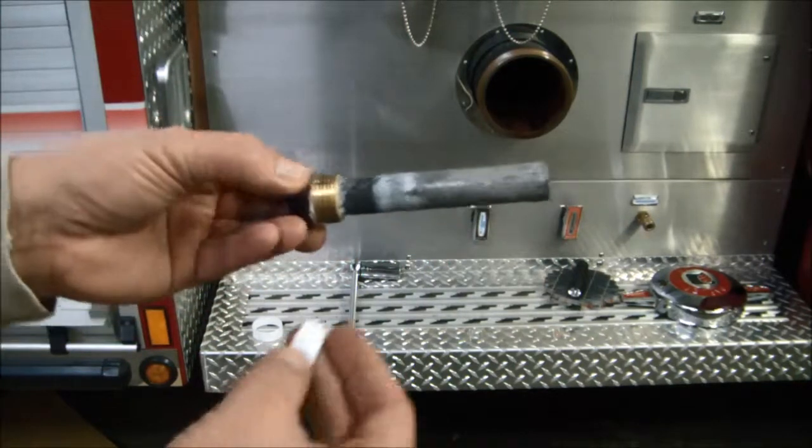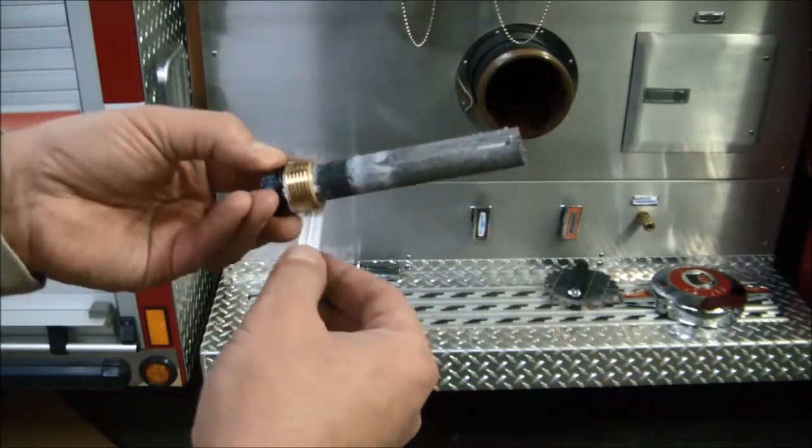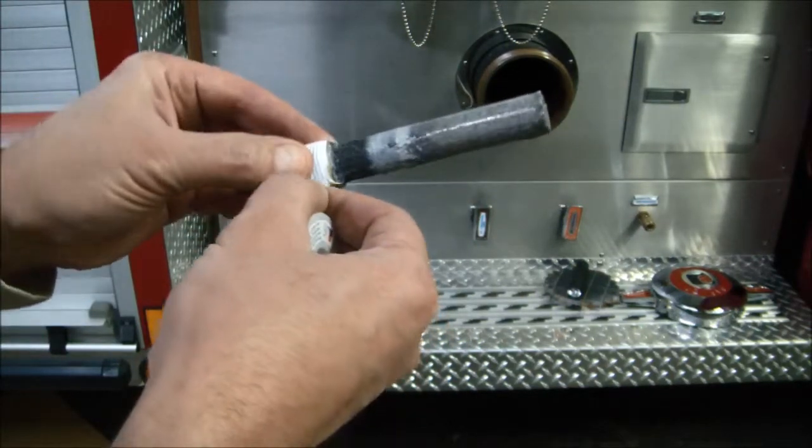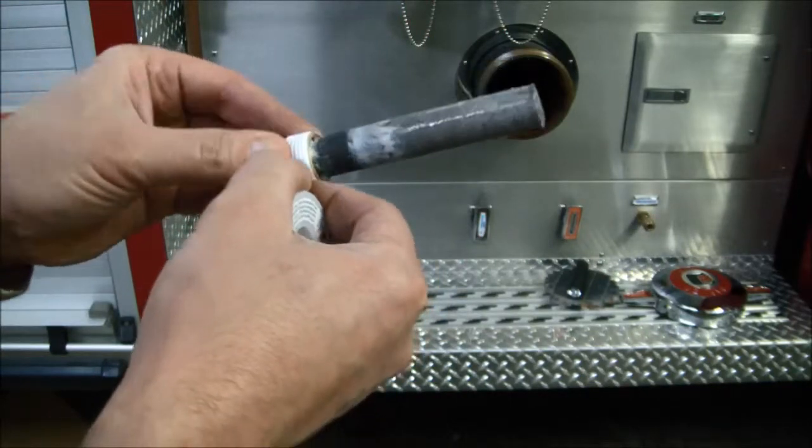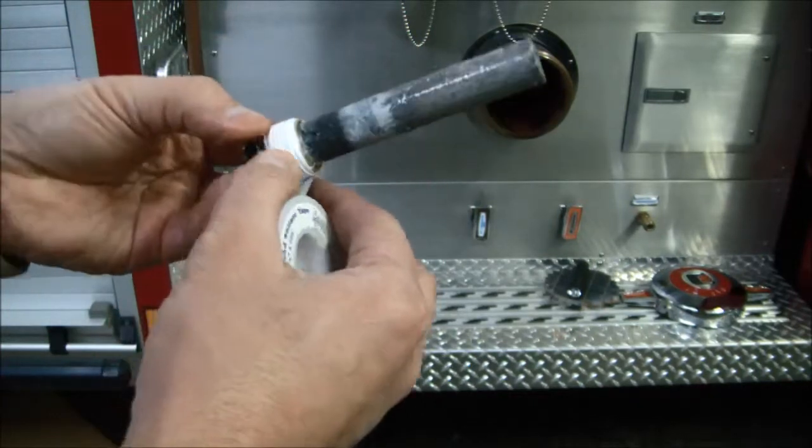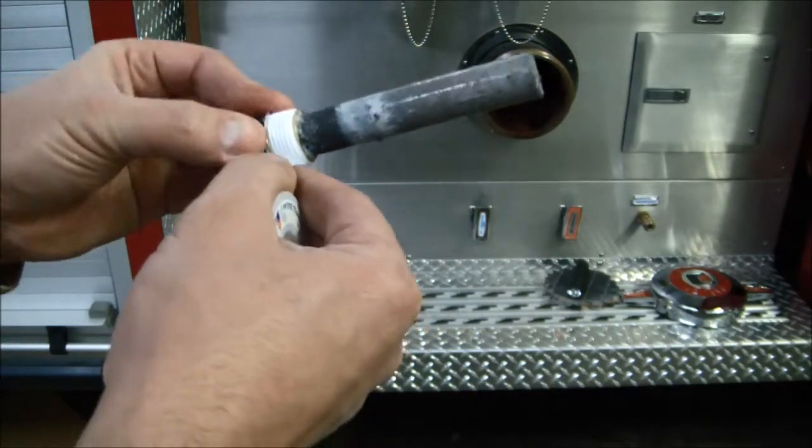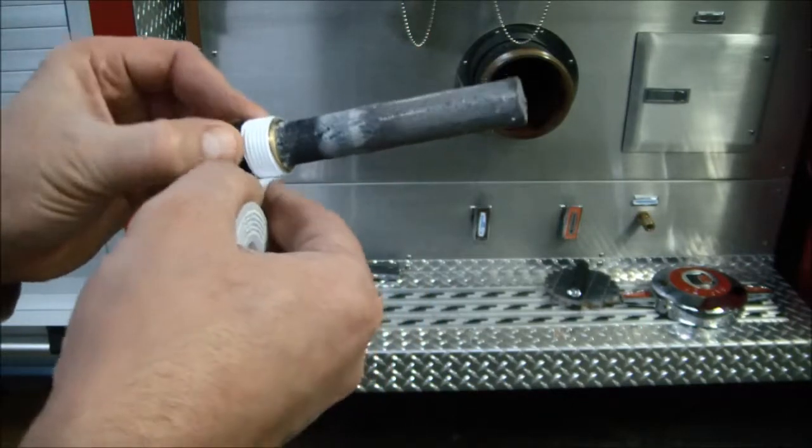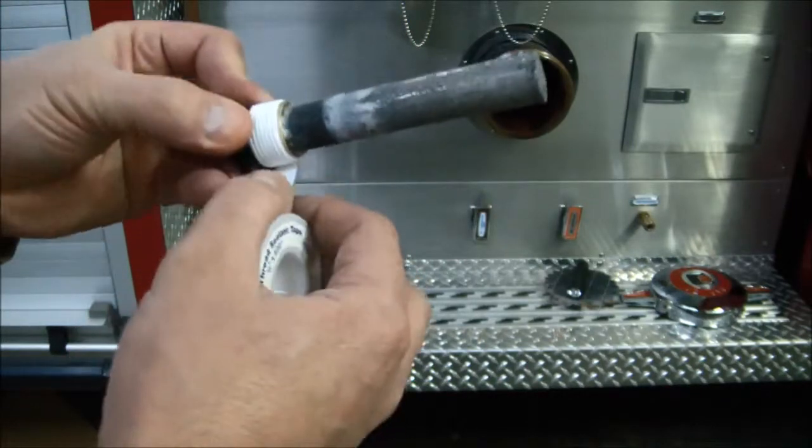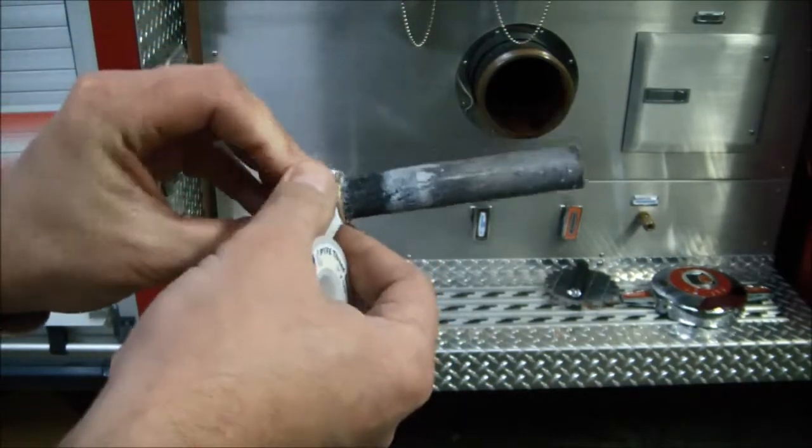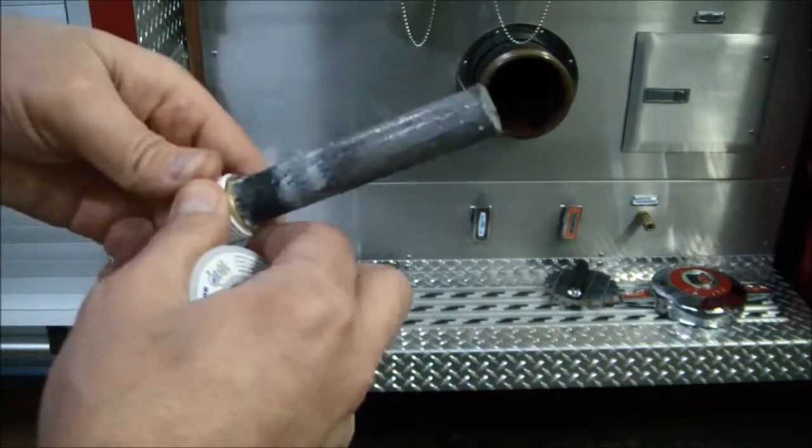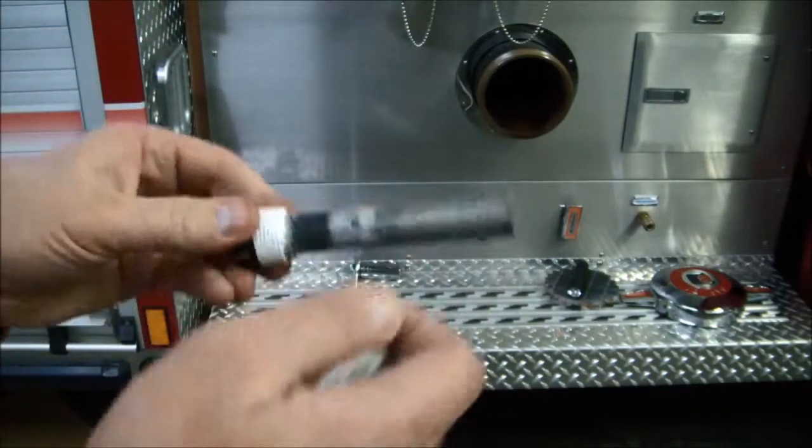So now when installing thread tape you always like to start here with the wrap starting on the bottom and you want to roll it around and get full coverage onto your threads. If you were working into an area where you want to avoid getting any of the Teflon tape inside of the plumbing or whatever you're working on, you would want to skip that first thread so that to keep the Teflon tape from ending up inside the product. But we'll just cover the threads here with thread tape. Make a good three full revolutions and then rip it off.